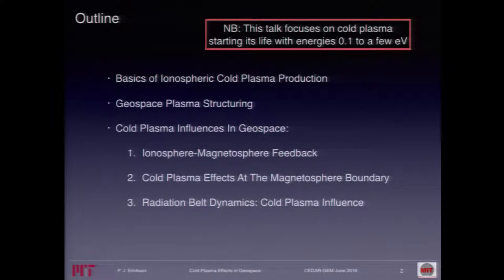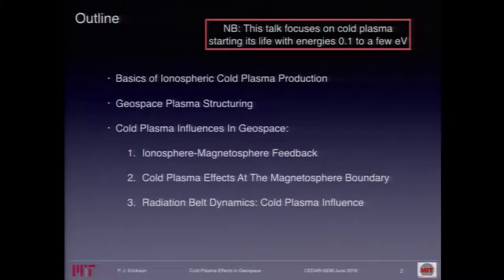For an outline: first, what do I mean by cold plasma? I'm really going to start with plasma that begins its life with energies of maybe a tenth of an electron volt to maybe a few electron volts. That's a way of segmenting this vast topic because there are fascinating things, including the warm plasma cloak, which I encourage you to go read about, and then there's stuff all the way up to relativistic energy and beyond. As an introduction, especially for the students, I'll talk about the ionosphere and some basic stuff about how it makes cold plasma, and then a little bit about plasma structuring.